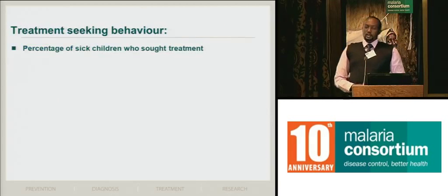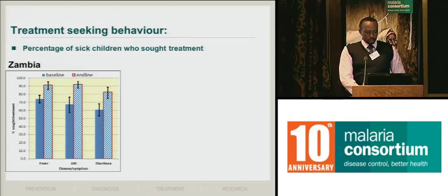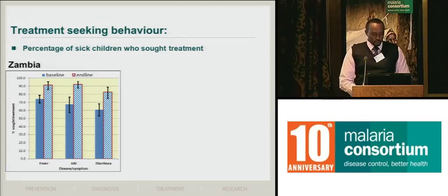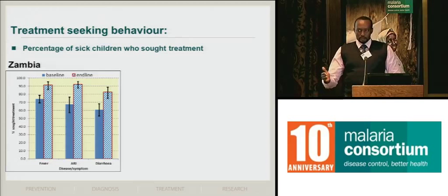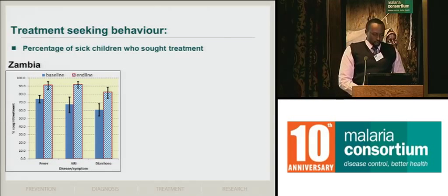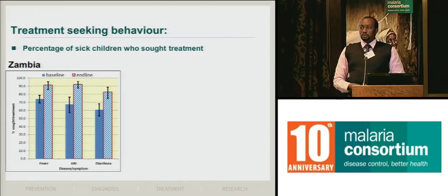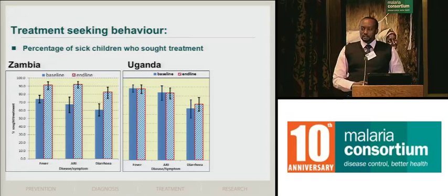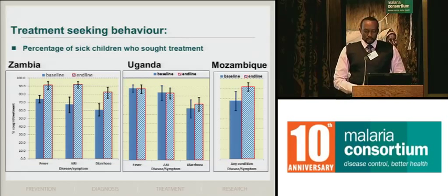When we go on to treatment-seeking behavior — the percentage of sick children who sought treatment — in Zambia, for all three conditions (fever, acute respiratory infection, and diarrhea), it went up at endline. There was an improvement in seeking treatment from about 70% to the 90s, so almost all children sought treatment. In Uganda, it was similar at endline to baseline, except a slight increase in diarrhea. In Mozambique, where we asked irrespective of the specific condition whether they sought treatment, it was also an increase. So across the board, we see an increase in treatment-seeking.